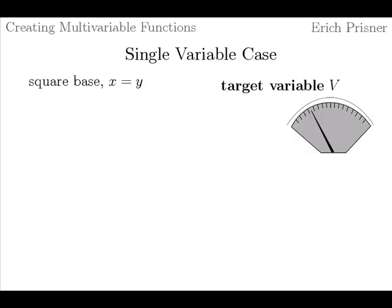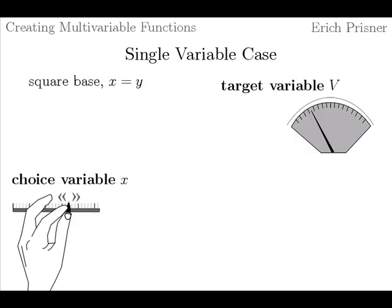Now let's review the single variable calculus 1 case first. Here we have an additional restriction, for instance of a square base meaning X must be equal to Y. We want to express the volume of the open box in terms of the length X of the square base. The variable we want to express, which is also the quantity we want to minimize or maximize later, we call the target variable. Its present value is displayed on a display. The single variable by which we want to express the target variable we call the choice variable. We change it using a slider control.